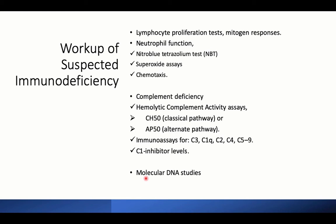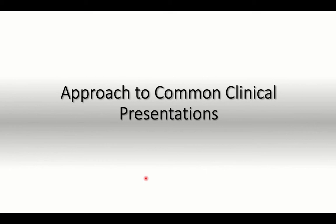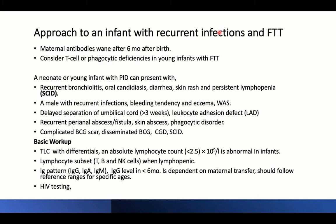In an infant with recurrent infections and failure to thrive: maternal antibodies wane after six months, so recurrent infections before six months suggest T-cell or phagocytic deficiency rather than antibody deficiency. A young infant with primary immune deficiency may present with recurrent bronchiolitis, persistent oral candidiasis, intractable diarrhea, skin rash, and persistent lymphopenia less than 2,500 — suspect severe combined immune deficiency. In a male with recurrent infections plus thrombocytopenia, microplatelets, and eczema, suspect Wiskott-Aldrich syndrome.